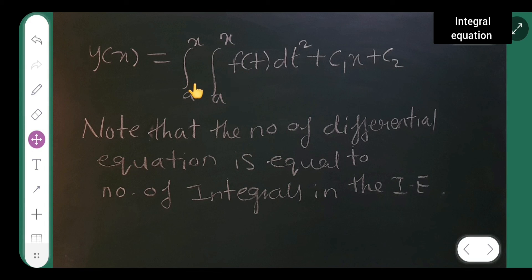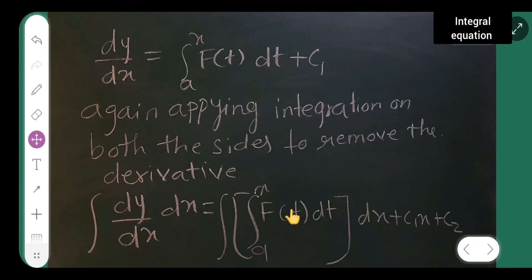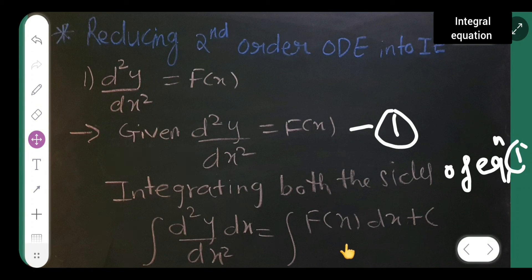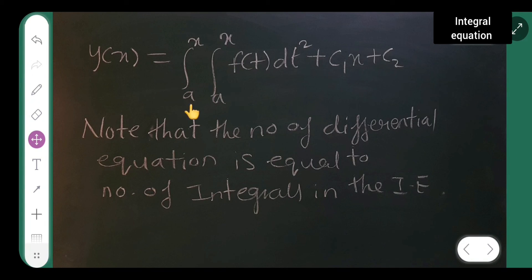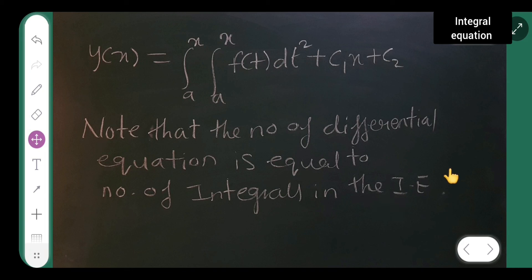There are two integrals here. When converting a second order ordinary differential equation, there are two derivatives, and correspondingly there are two integrals in the integral equation. You have to note that the number of derivatives in the differential equation equals the number of integrals in the integral equation. I hope you all understood today's lecture. If not, you can comment below. Thanks for watching.